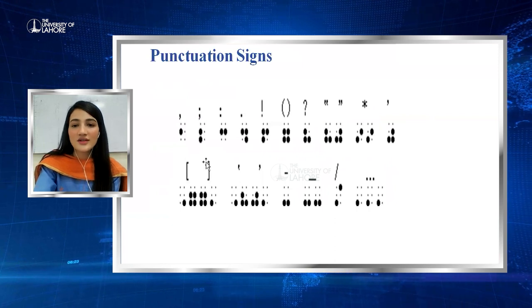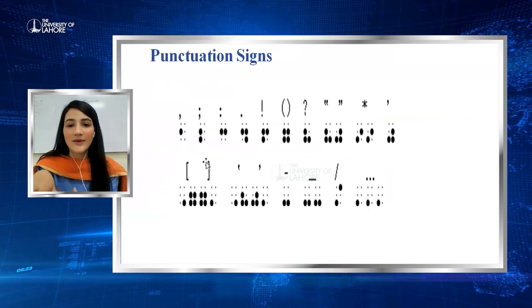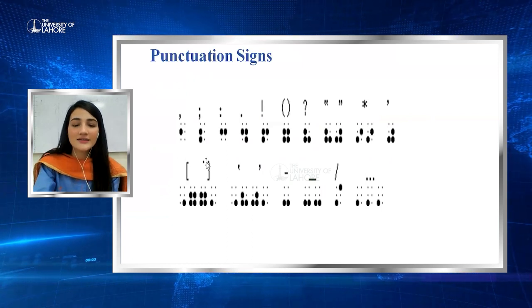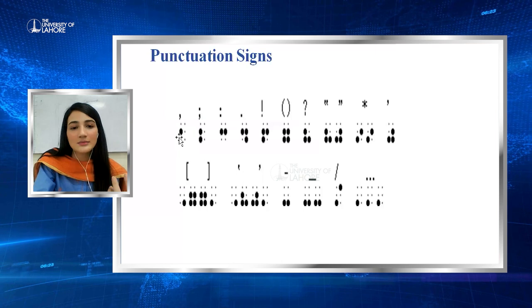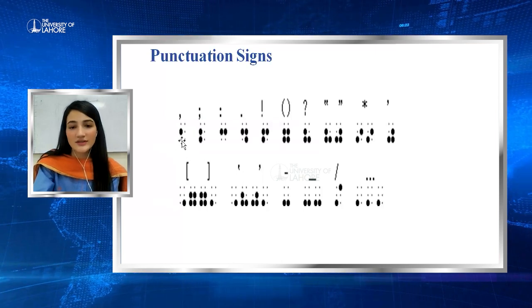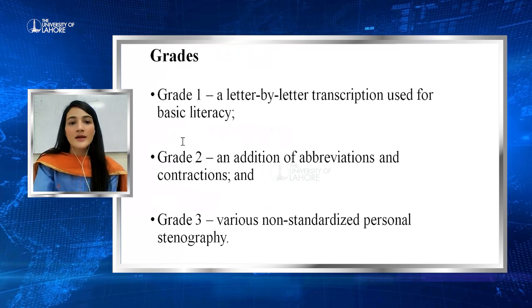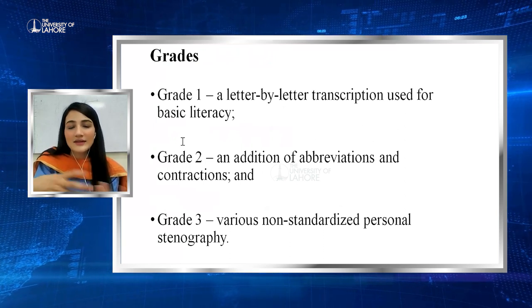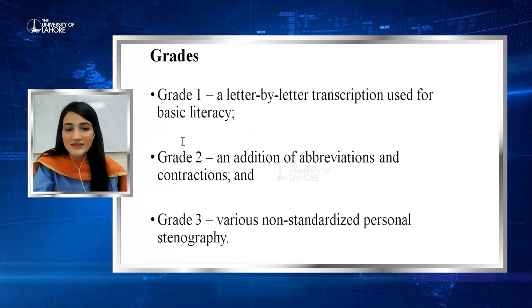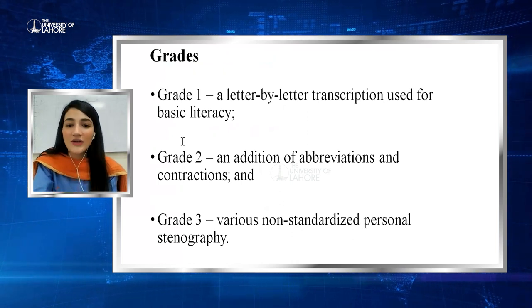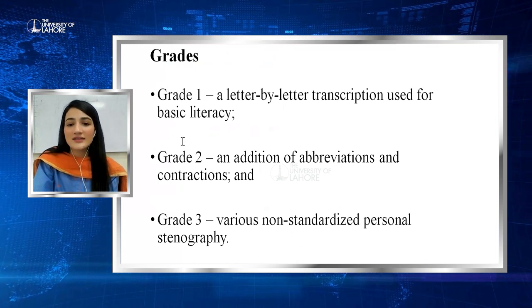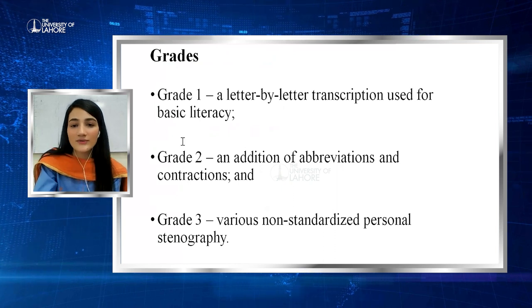These are the punctuations — sign punctuations follow the same pattern as A to J. The only difference is that the bottom four dots are raised, not the top four. Grade 1 Braille consists of a letter-by-letter transcription used for basic literacy. Grade 2 is an addition of abbreviations and contractions. Grade 3 is various non-standardized personal stenography.